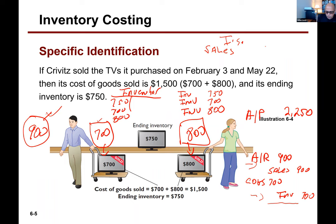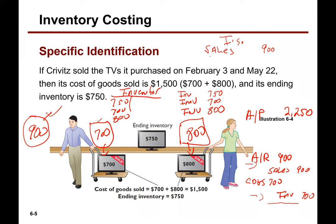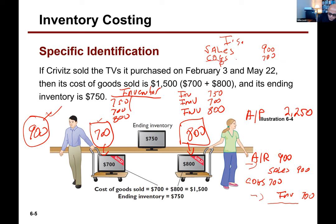In the multiple-step income statement, we report net income. We calculate it by taking sales minus cost of goods sold — I'll abbreviate that COGS. In this example, COGS is $700, which gives us a gross profit of $200. Then I would continue to calculate operating income by subtracting operating expenses, and then non-operating items in the calculation of net income, which we covered in chapter six.